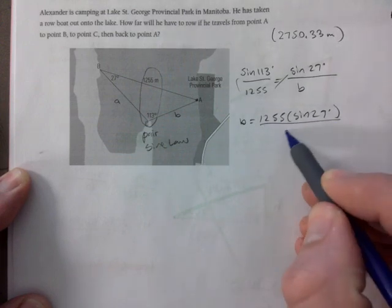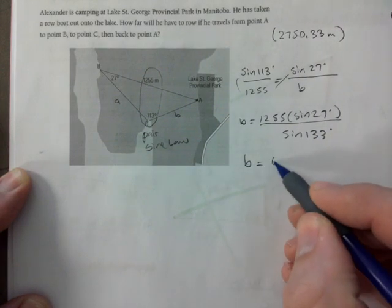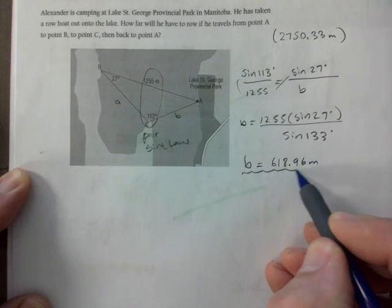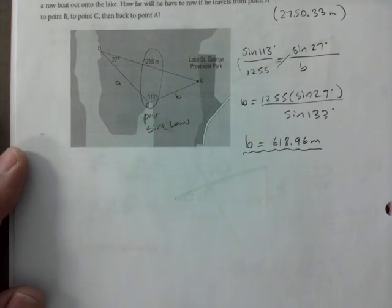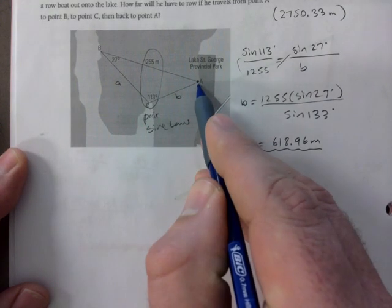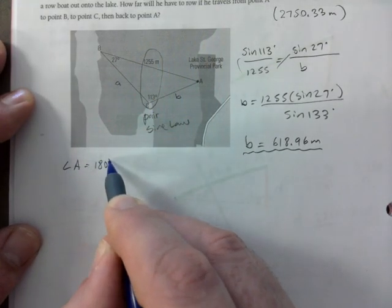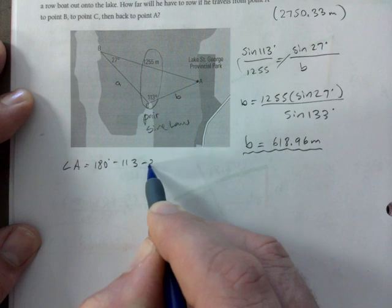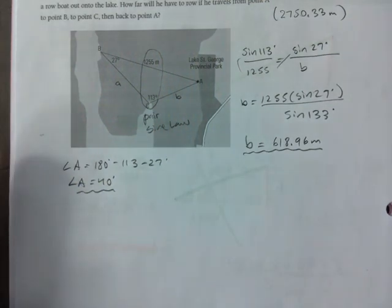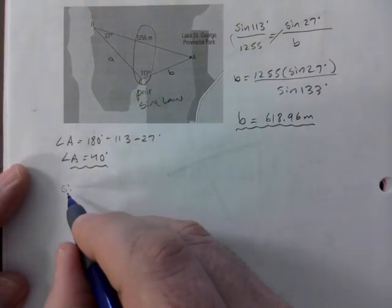Over sine of 133. So just for notes purposes, 618.96 meters. That is not quite the answer yet but that is part of my answer. To find side a I need angle A, and I already have two, so angle A would be 180 minus 113 minus 27. Angle A would just be 40 degrees.